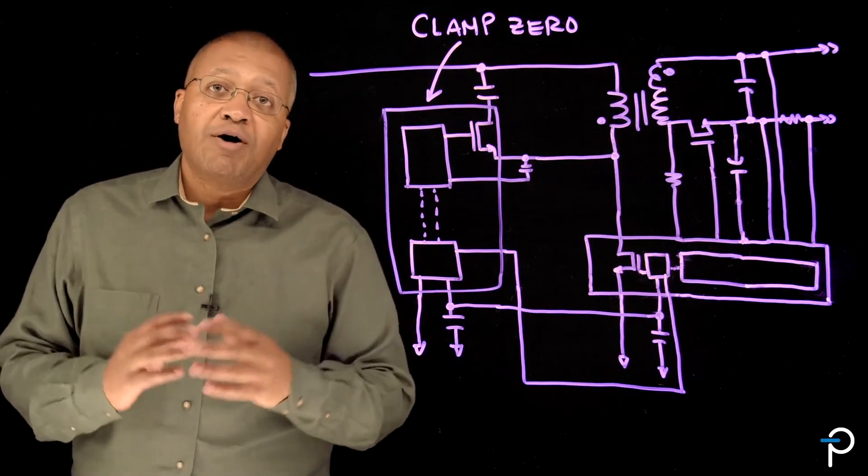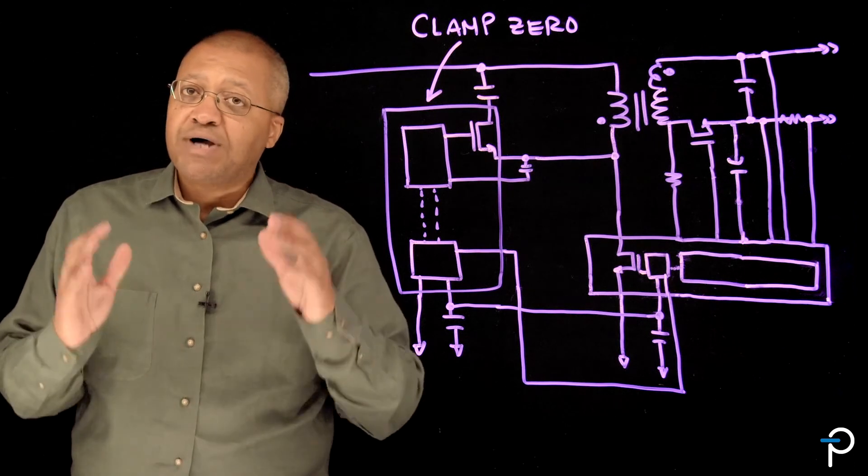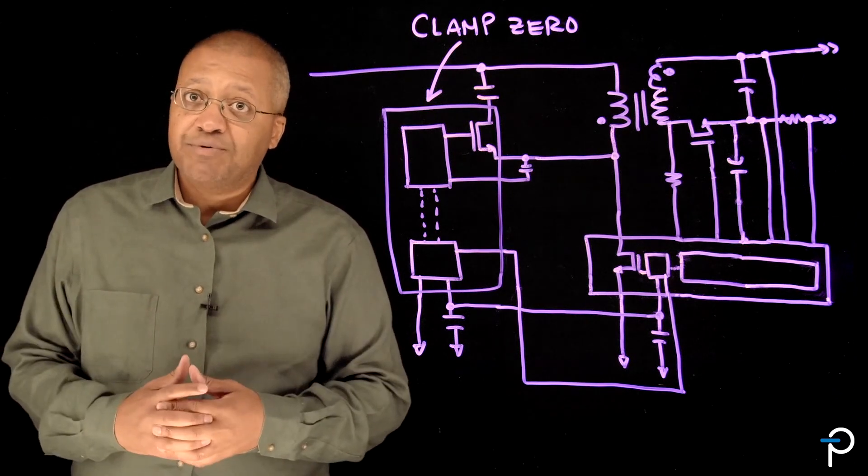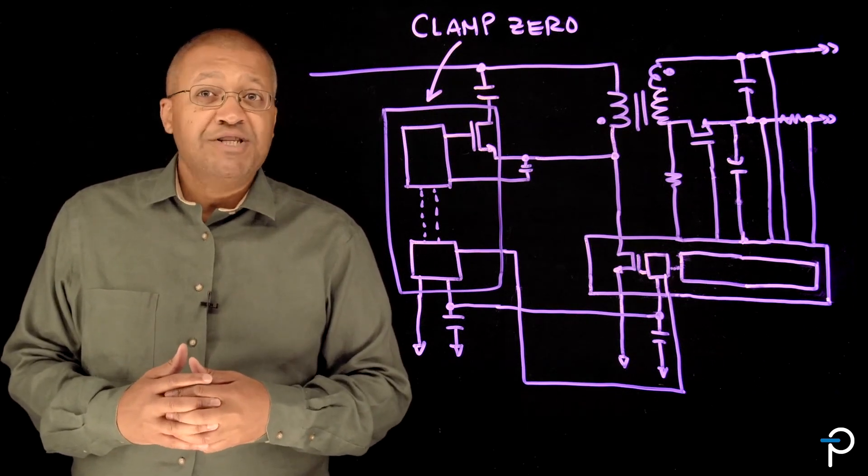The ClampZero is a very important part of our portfolio. It enables high power density, high efficiency adapters. It simplifies a very difficult problem. To learn more about the ClampZero and InnoSwitch 4, please visit us at power.com.